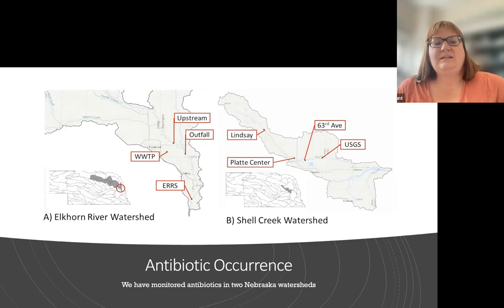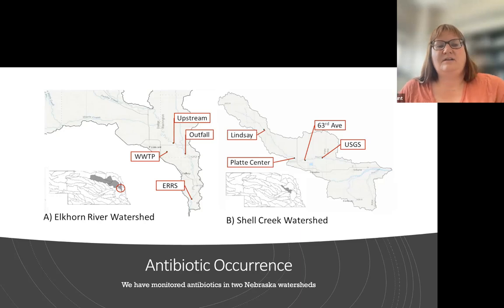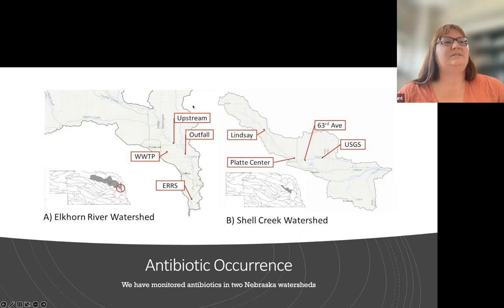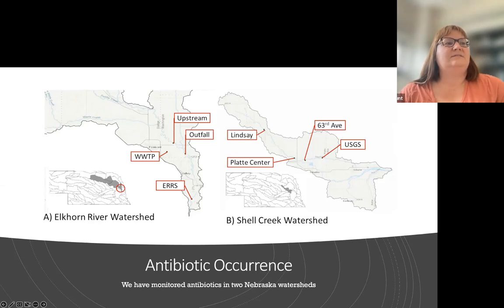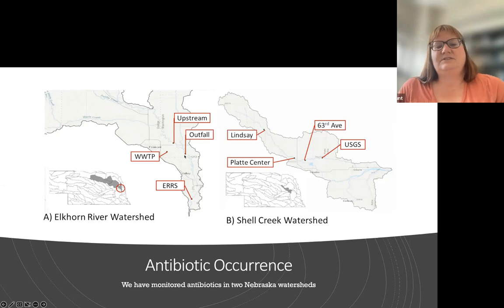The Elkhorn River watershed is highly agricultural, with a lot of animal feeding operations, and it drains the northeast portion of Nebraska. We have sampling locations upstream of the Fremont, Nebraska wastewater treatment plant. We also sampled within the wastewater treatment plant effluent, since municipal wastewater is a source of antibiotics to the environment. The plant is located a distance from the Elkhorn River, so we sampled both the effluent and the outfall where it mixes into the river, as well as downstream at the Elkhorn River Research Station.